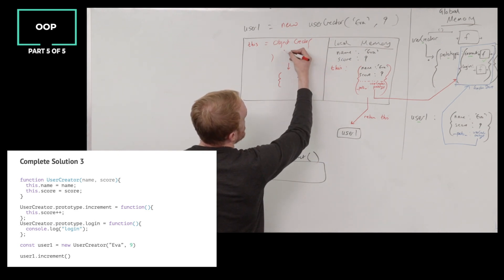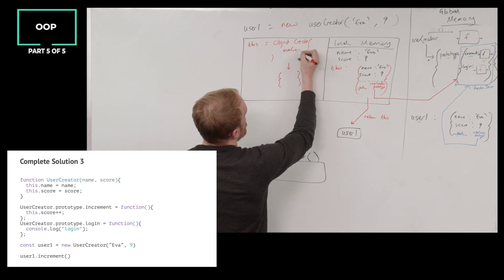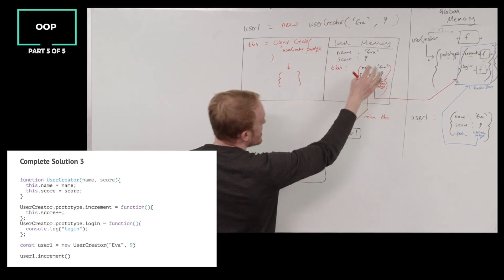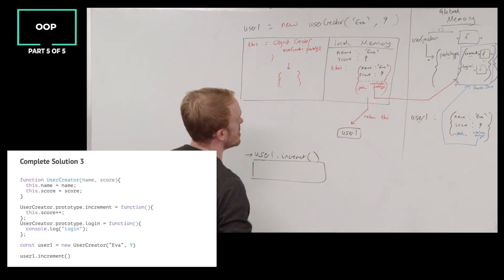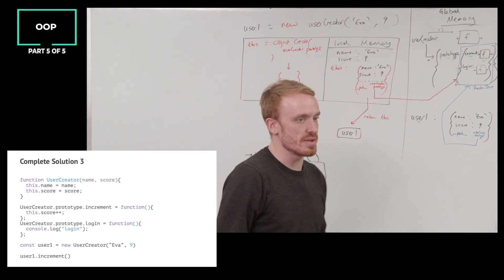So what is basically passed into object.create here by new? User creator dot prototype. That object, exactly. That object of shared functions. We want each of these objects that gets returned from calling user creator to have access to.